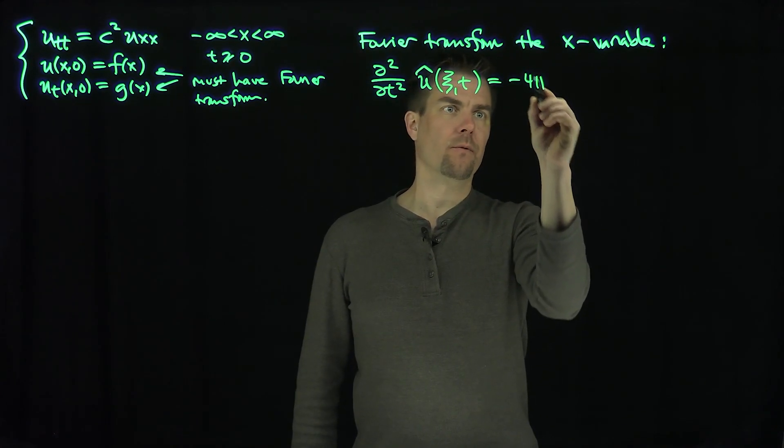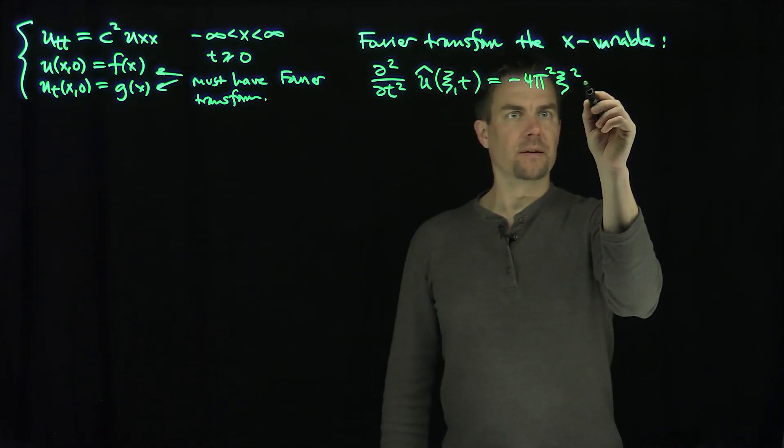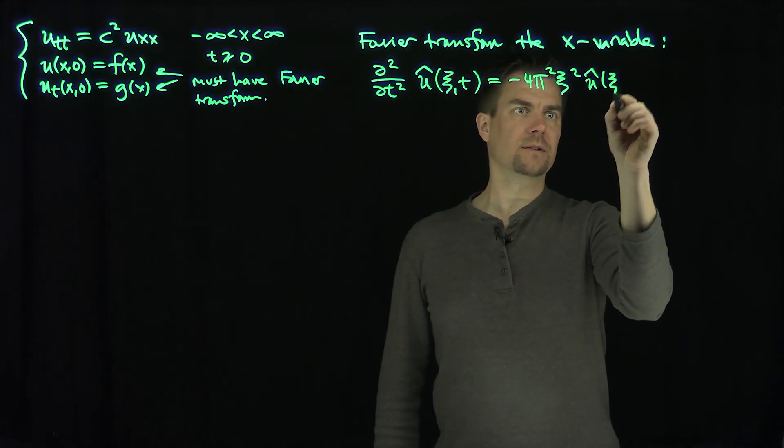And this is equal to negative, as we've seen before, 4 pi squared xc squared, that's my rule for the derivative, and then what? And then U hat xc and t.